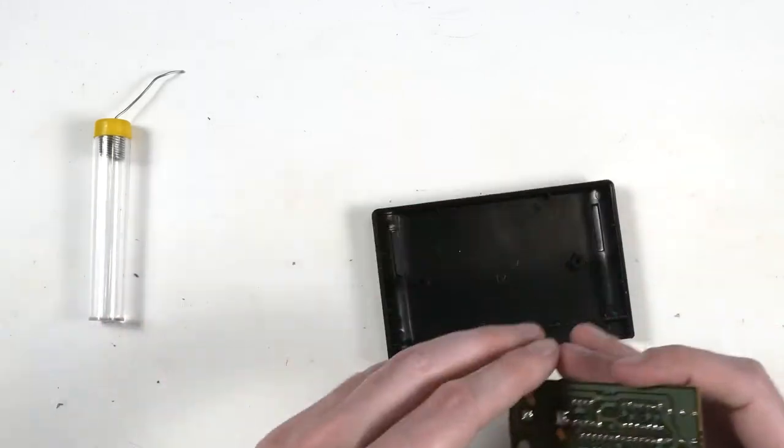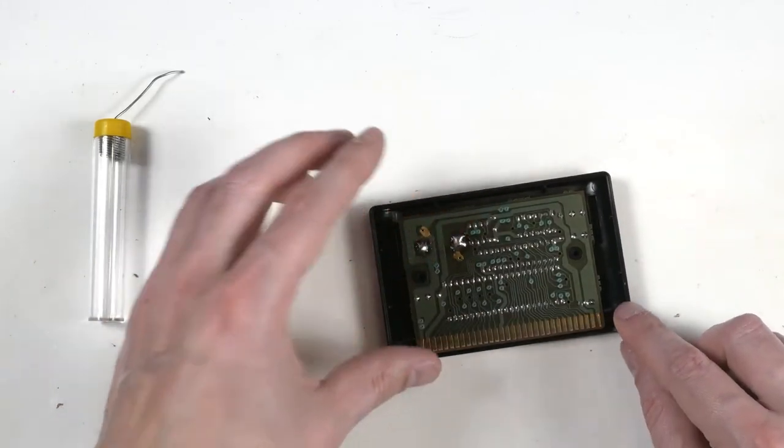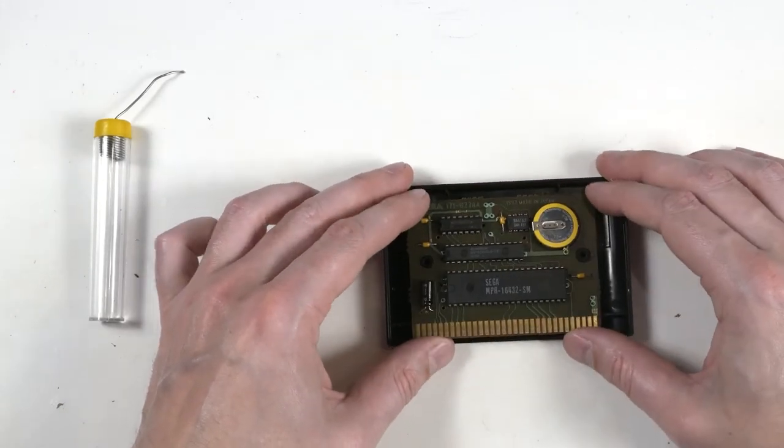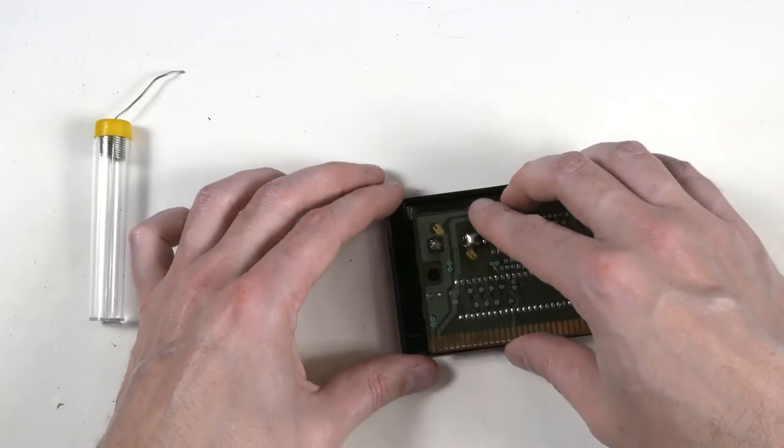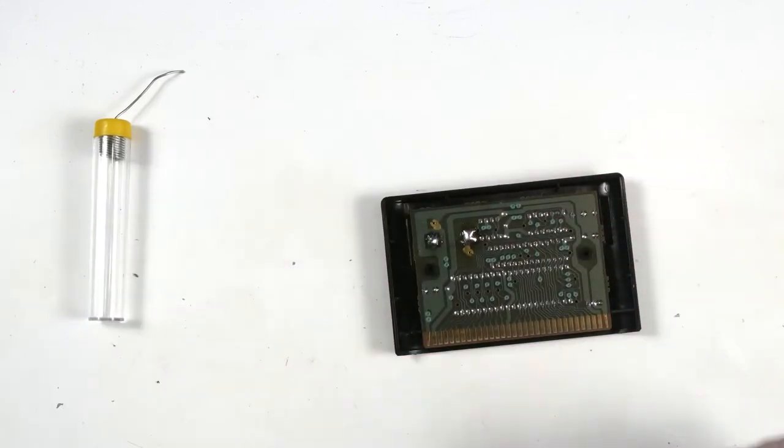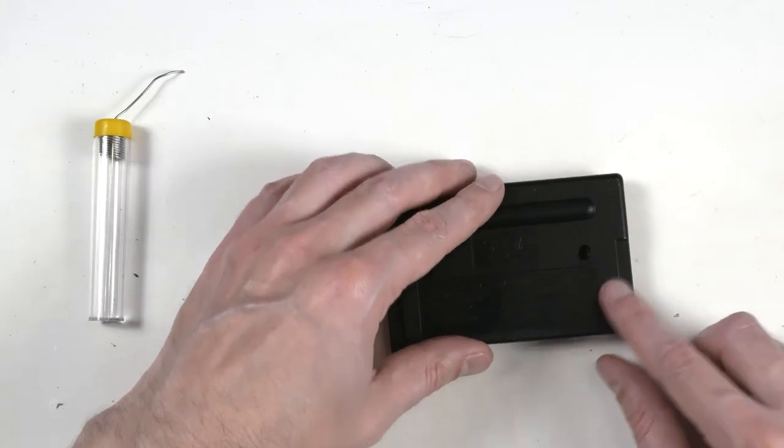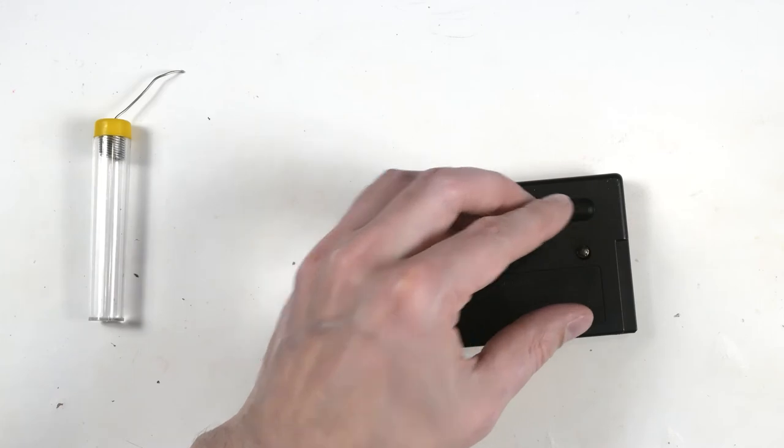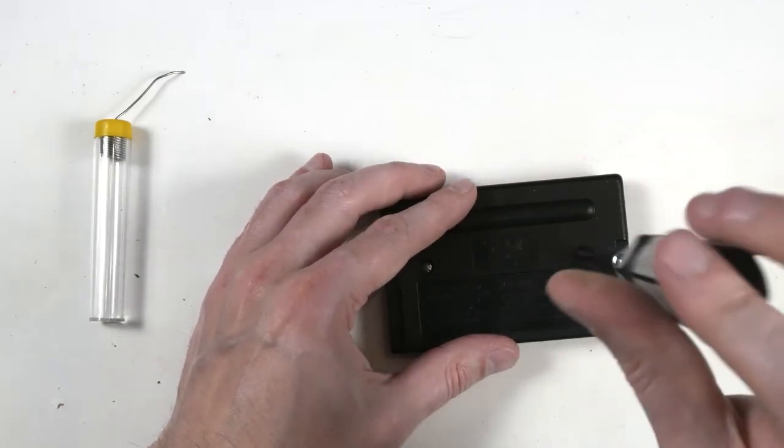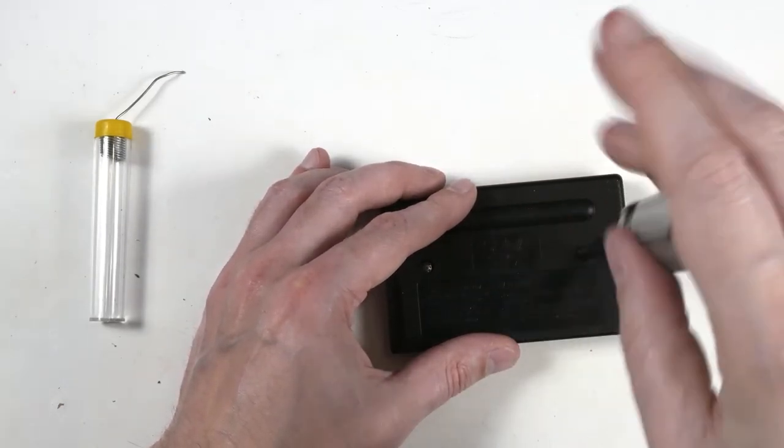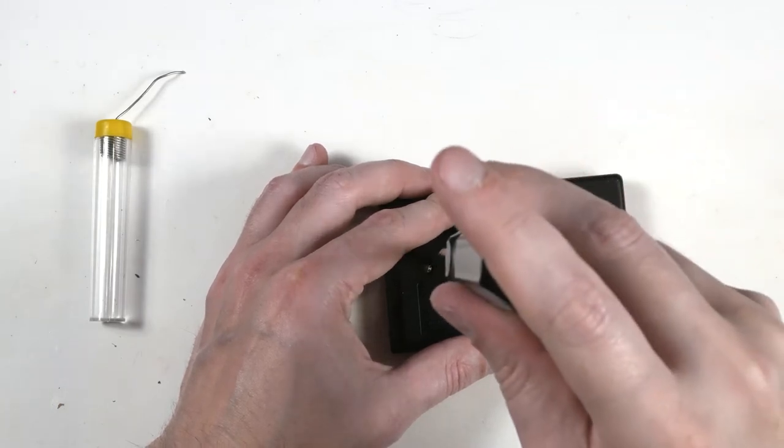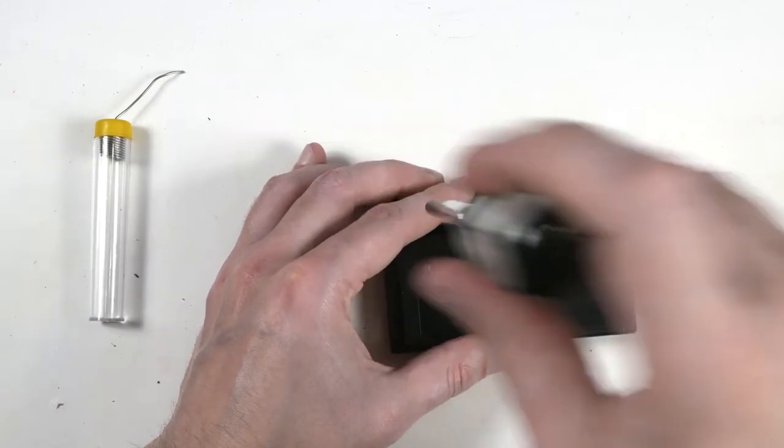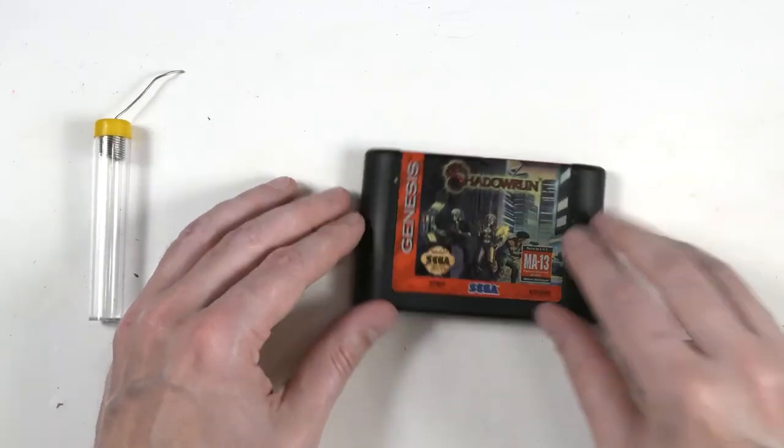Take the top of our case. These pins only allow the game to go in one way. You can't put it in backwards. It won't fit. So if it's not fitting, let's try flipping it over. Back on. Our security screws and our large game bit. Tighten it down. All done.